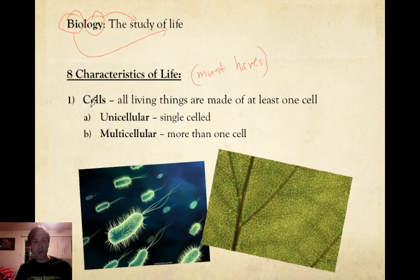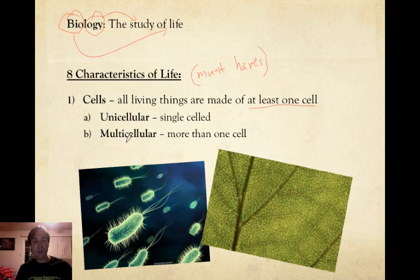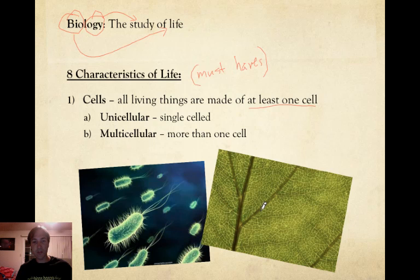Characteristic number one is that you must have cells. All living things must have at least one cell. There are some things like bacteria that are unicellular — they only have one cell. Then you have organisms that are multicellular, like you or I or this plant down here. You can see the many, many cells within the leaf. A multicellular organism is something with more than one cell.